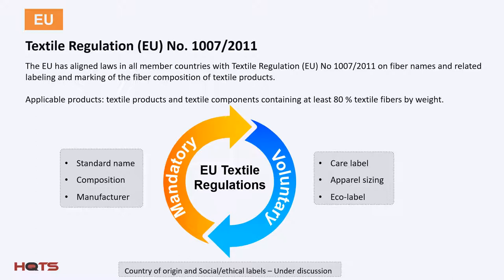Let's move on to discussion of labeling requirements in the European Union. The EU has aligned laws in all member countries under textile regulation number 1007/2011 for fiber names and related labeling and marking of fiber composition for textile products. Textile products must be labeled or marked before they can be sold, and fiber composition information must be provided at all stages of processing and commercial distribution. All products containing at least 80% by weight of textile fibers — including raw materials, semi-worked products, worked products, semi-manufactured, semi-made, and made-up products — are covered by this regulation. The regulation does not cover sizes, eco-labels, or wash and care labeling, all of which are considered voluntary.